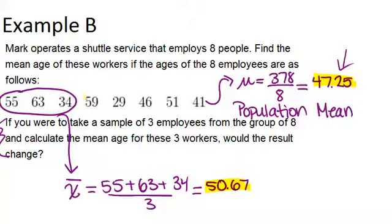We could have picked another 3 employees at random and found that that sample mean was below the population mean. So it all depends on the people you pick.